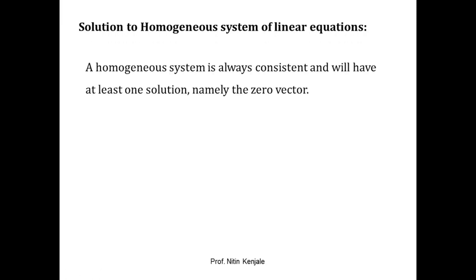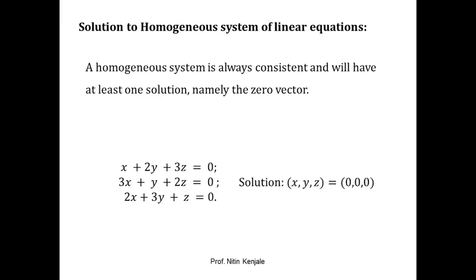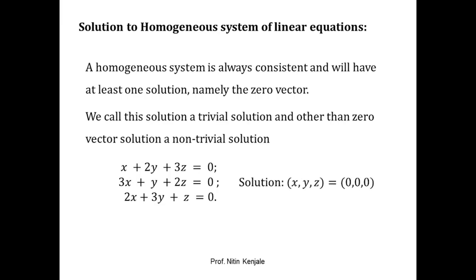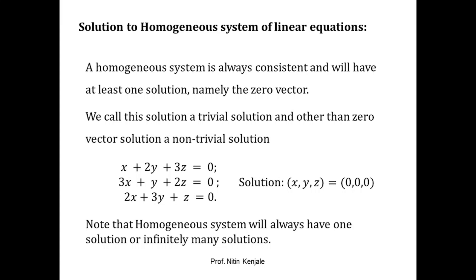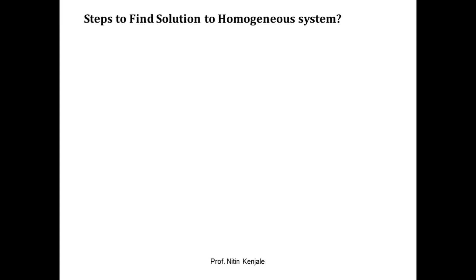A homogeneous system is always consistent, meaning it will have at least one solution — the all-zero vector. If we put x=0, y=0, and z=0 in these equations, the equations are satisfied. Therefore, zero, zero, zero — the all-zero vector — is a solution, called the trivial solution. A solution other than the zero vector is called a non-trivial solution. A system of homogeneous equations will always have either the zero vector or infinitely many solutions.